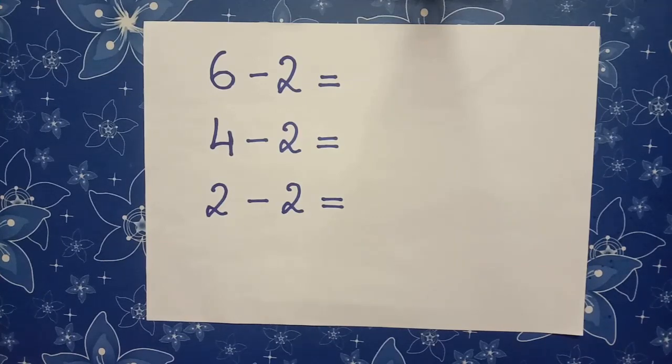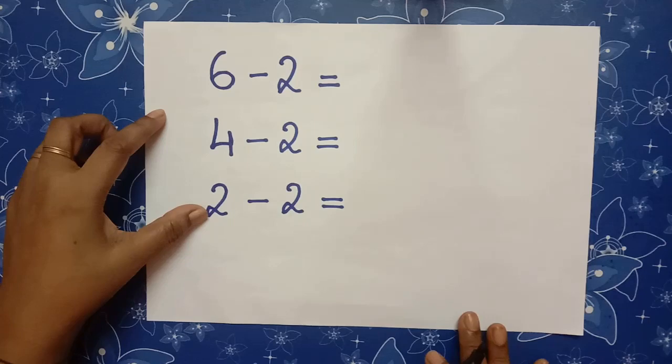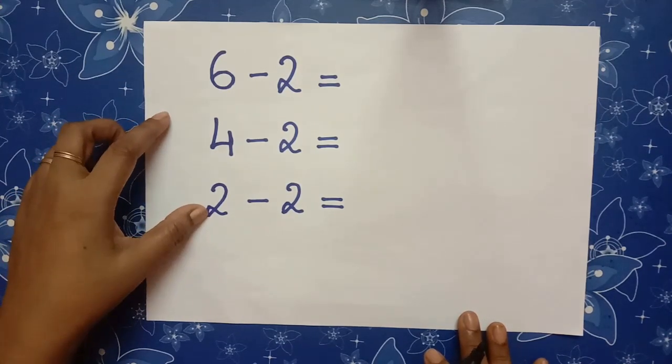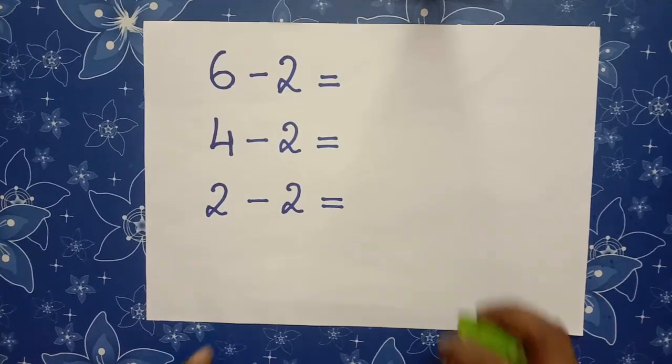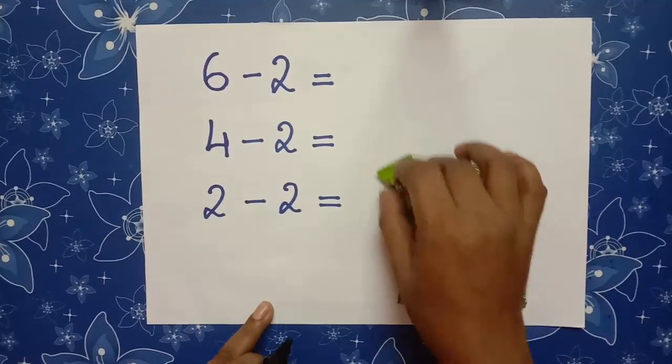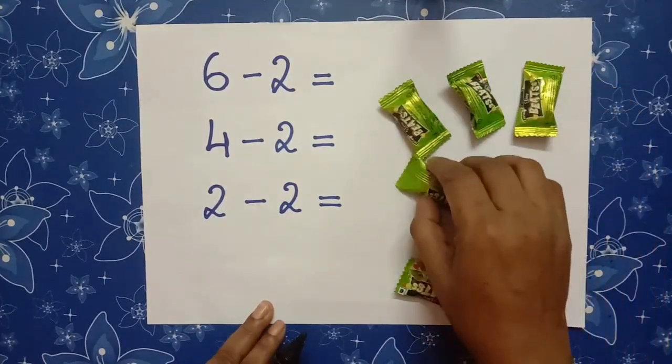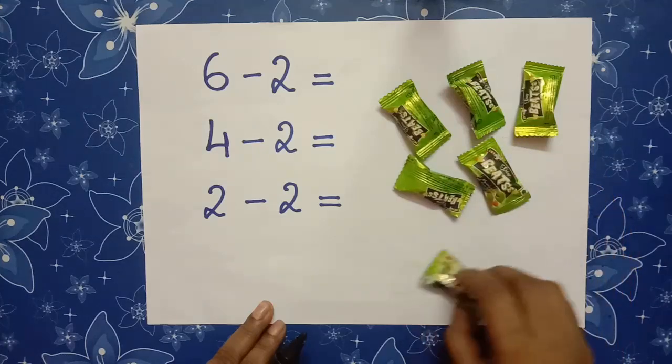Children, Division, Repeated Subtraction of Same Number is called Division. Let us understand Division through an example. Anu had 6 sweets. Count and see. How many sweets are there? 1, 2, 3, 4, 5, 6.